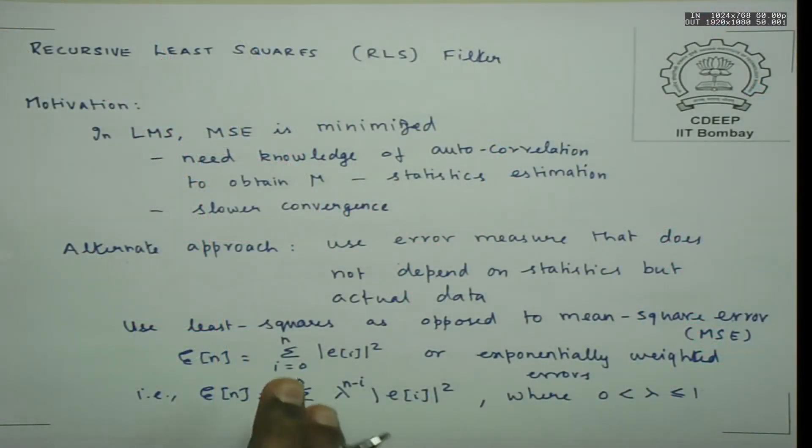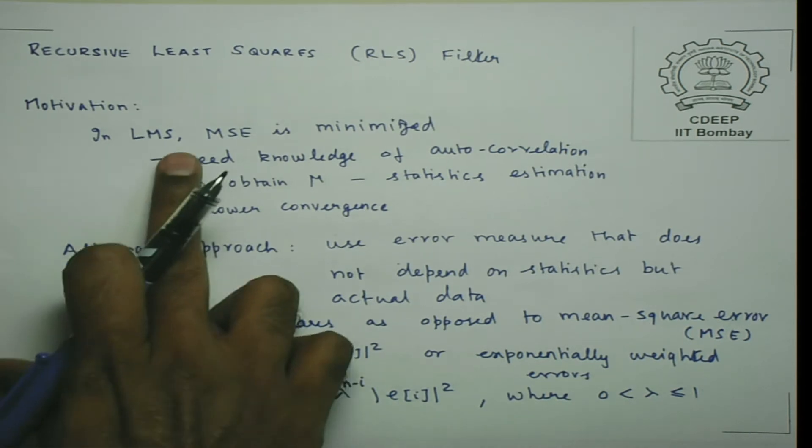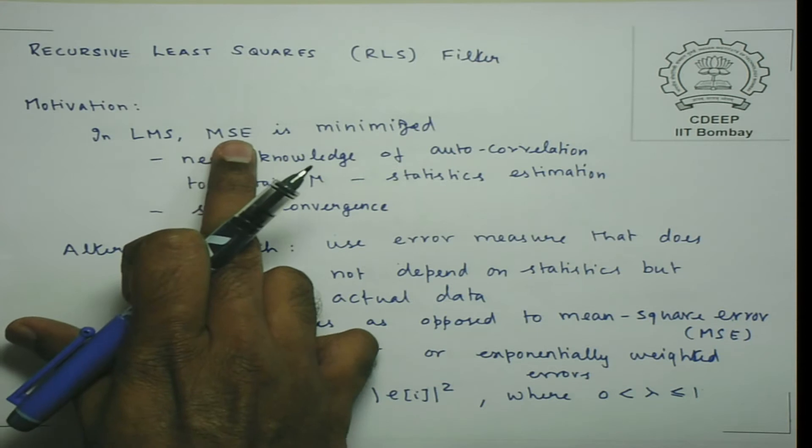All these approaches assume that we could have an estimate of the statistics of the signal, and based on that we were making our algorithm do something. Now we will look at an algorithm which does not expect any statistics to be available and still tries to do things in an adaptive fashion to estimate a signal. This is referred to as the recursively least square filter, and this will also be the last major topic under adaptive signal processing.